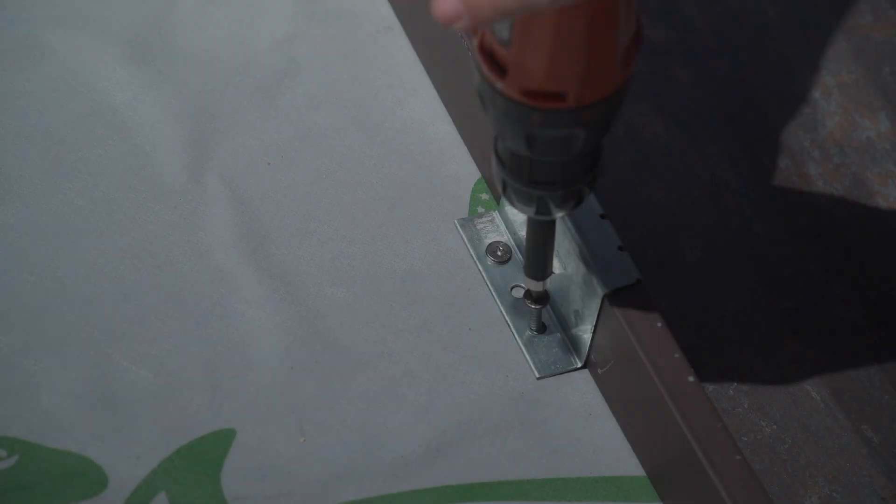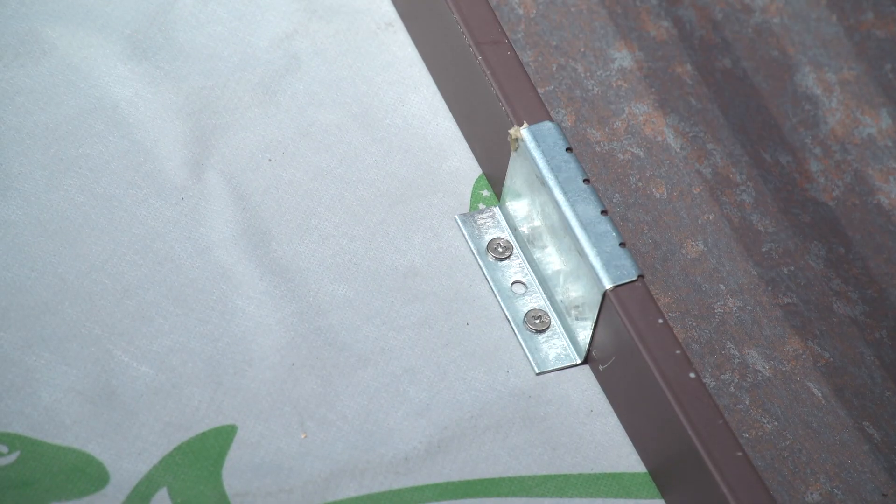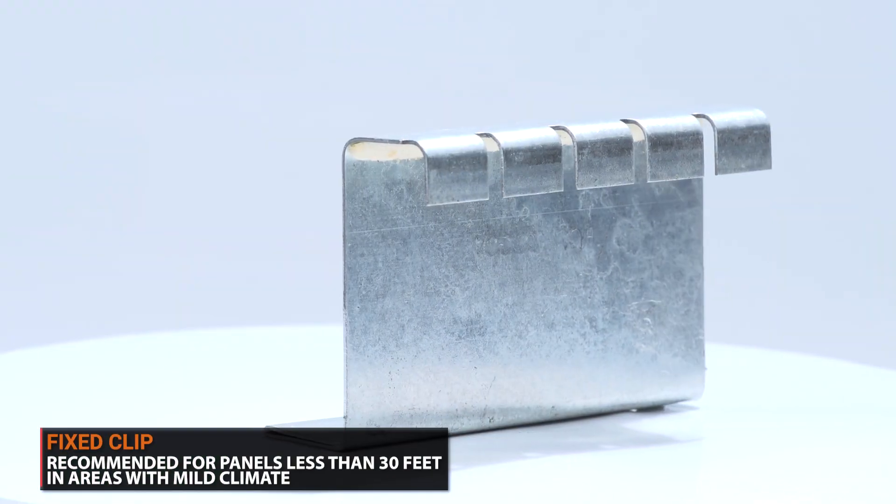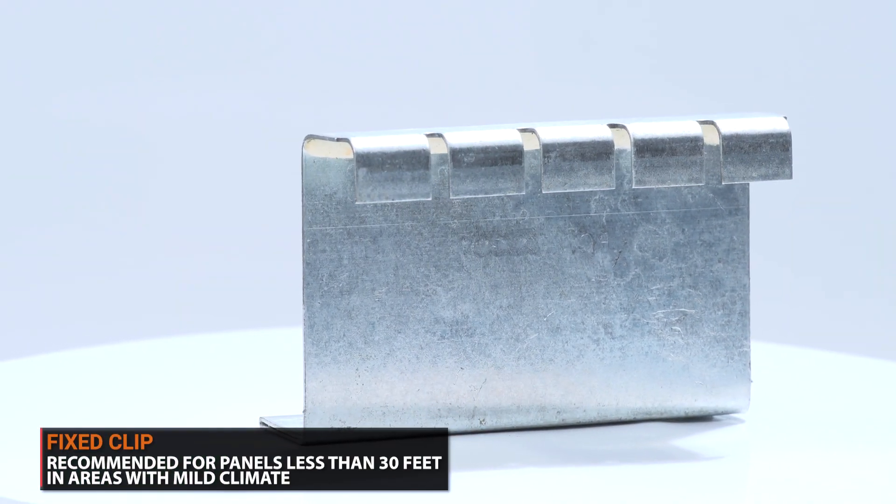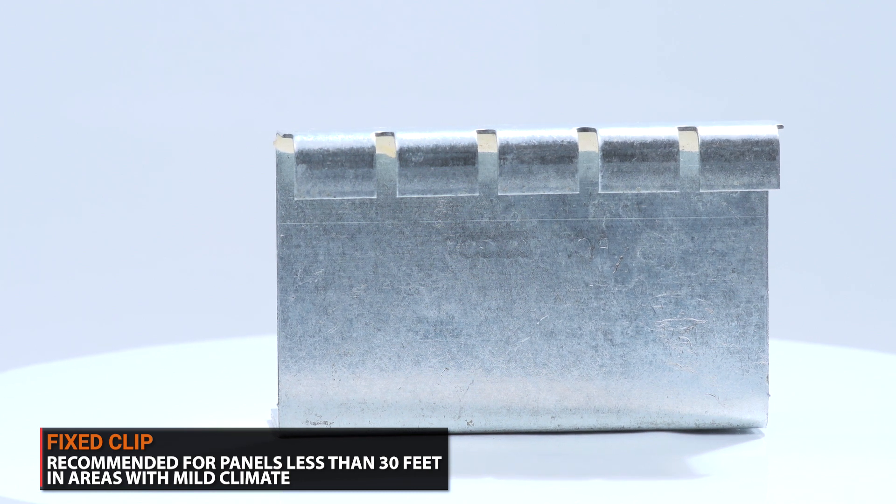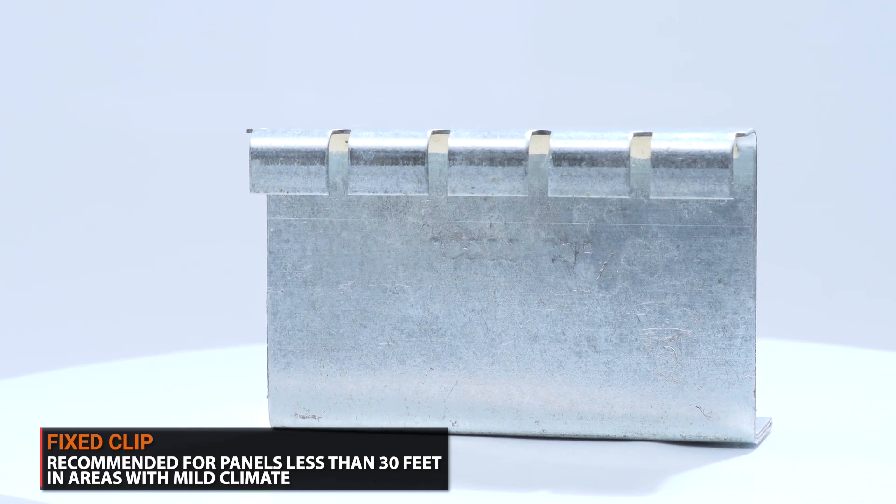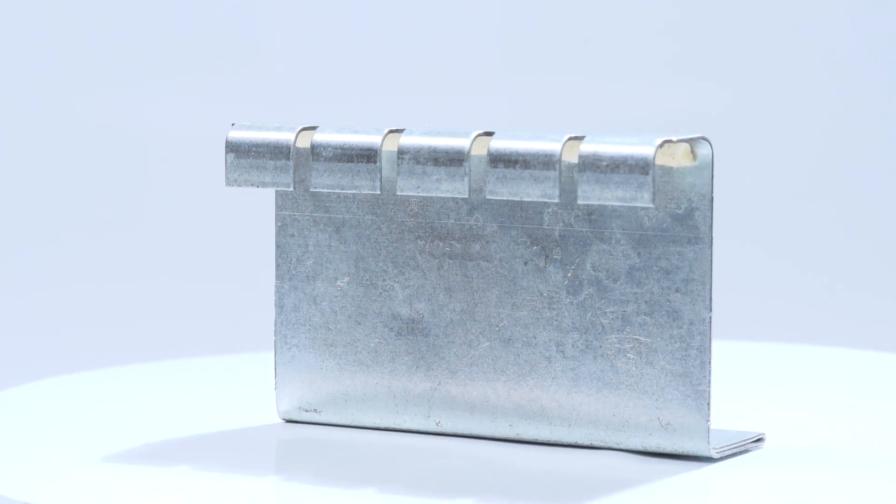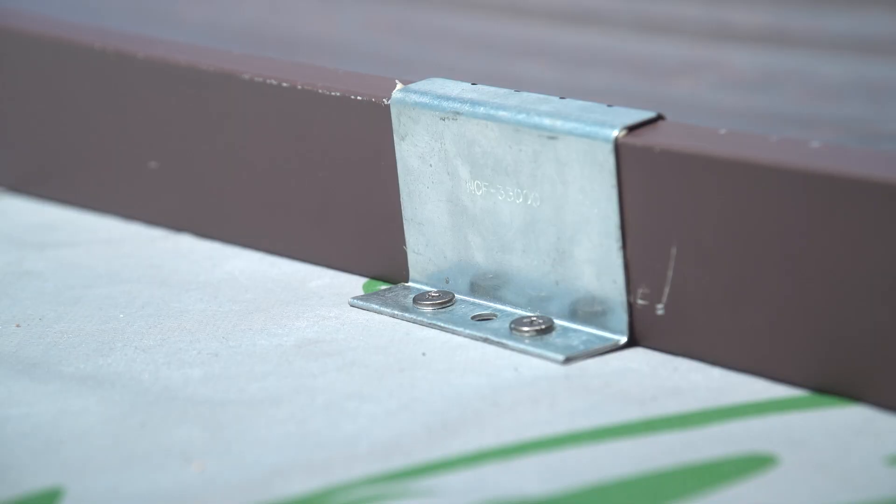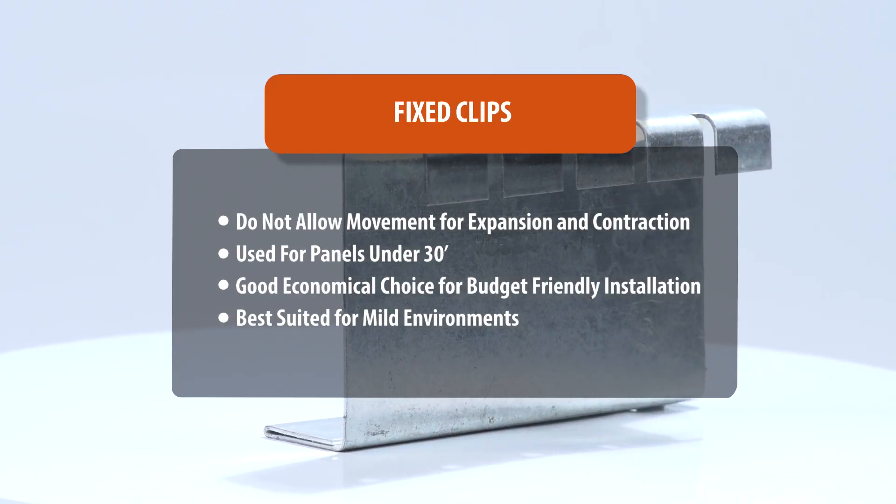Fixed clips are recommended to be installed when running metal panels that are less than 30 feet. They are also the more economical choice and are good to use when looking to have a more budget-friendly installation. Since fixed clips do not allow for thermal movement, they are best suited for environments that do not experience extreme temperature changes, as they reduce stress on the clips and panels.